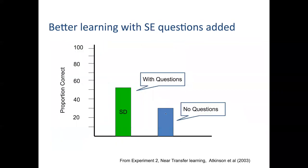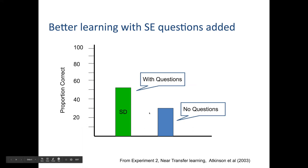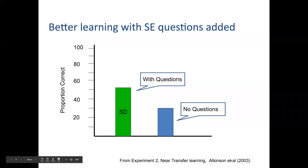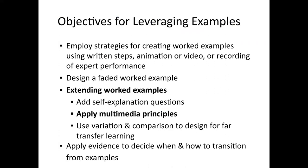So is it effective? Yes, it's super effective. You get better learning with self-explanation questions added. Atkinson showed this in one experiment illustrated in a graph, and there have been a number of studies along these lines — including some in our geometry cognitive tutor. So you can extend worked examples by self-explanation prompts — super powerful.